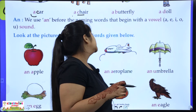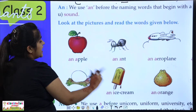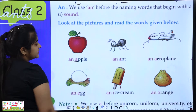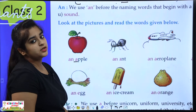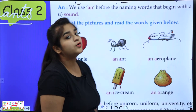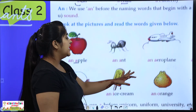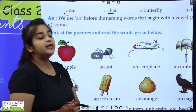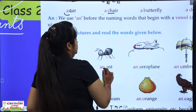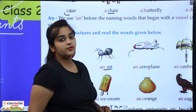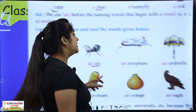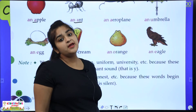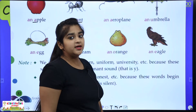For example, 'an apple' — apple starts with A, which is a vowel. 'An aunt' — aunt also starts with A, a vowel. Then: an aeroplane, an umbrella. When the first letter is a vowel, we use AN.